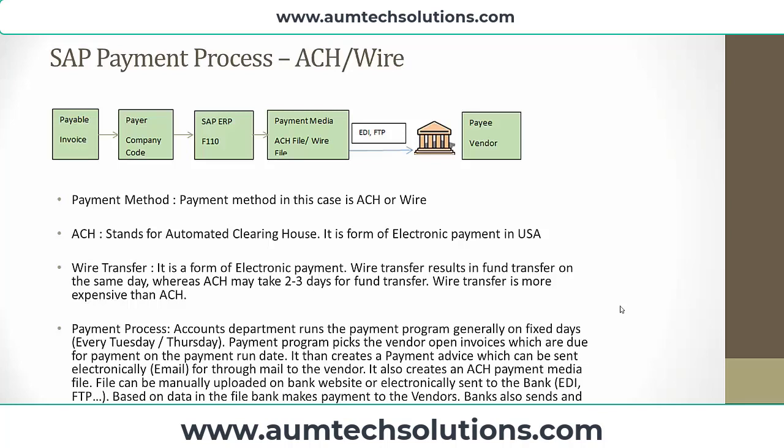Once the bank receives the file, they make an ACH or wire transfer payment to the vendor based on the details in the file. The bank will also send us a confirmation of the file received and a successful transmission of payments to the vendor.